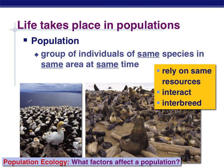We're now done with the intro part and we're going to jump into population ecology. Life takes place in populations. We can define a population as a group of individuals of the same species in the same area at the same time. They all have to be the exact same species, living in the same general area, and it has to be at the same time. All of these individuals will rely on the same resources — water, shelter, food. They will interact with each other and anything else that lives in that environment, and hopefully they will interbreed and keep their species going.